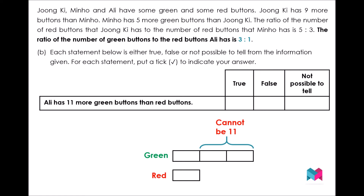If Ali has 11 more green buttons than red buttons, then 1 unit would be 11 divided by 2, which is 5.5, and he would have 5.5 × 3 = 16.5 green buttons. This is impossible as buttons cannot exist as half a button. So the answer for this statement is false, because only an even number can be divided by 2 to give a whole number. So Ali cannot have 11 more green buttons than red buttons.